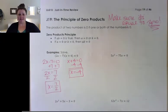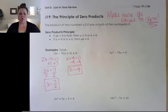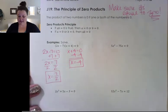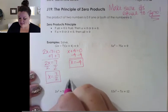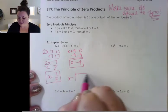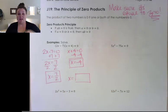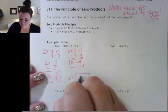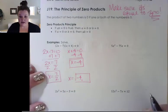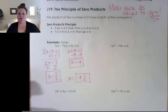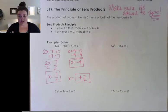On an exam or on a worksheet, I would be totally fine with you boxing in your answers. In MyMathLab, it gives you x equals and then a box, and you put your answers in. So you would put in negative 4, and then a comma, and then 7 halves. Make sure you put the comma in there to separate your answers, and don't use spaces.